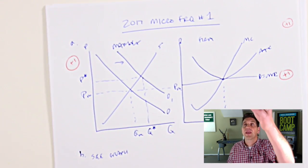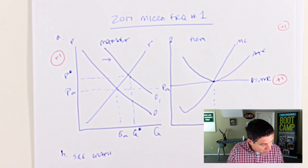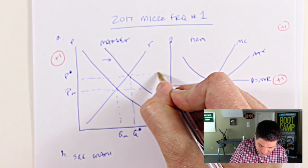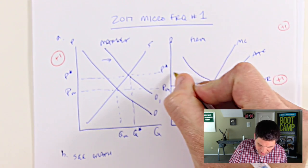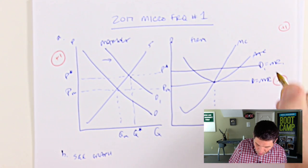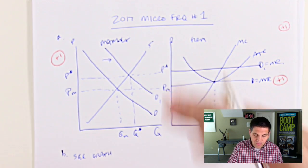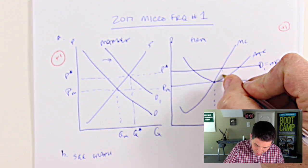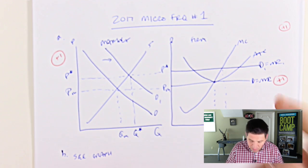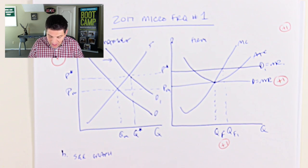Also, they're asking you to label the new demand. This is the price taker. We'll say P star to be consistent. Horizontal demand equals marginal revenue. So now the demand has gone up for the firm, which makes sense, right? So demand goes up for the market. Demand goes up for the firm. We've got a new quantity. We're going to do that new quantity right there. It doesn't ask you to label that something. I'll just label it QF one.